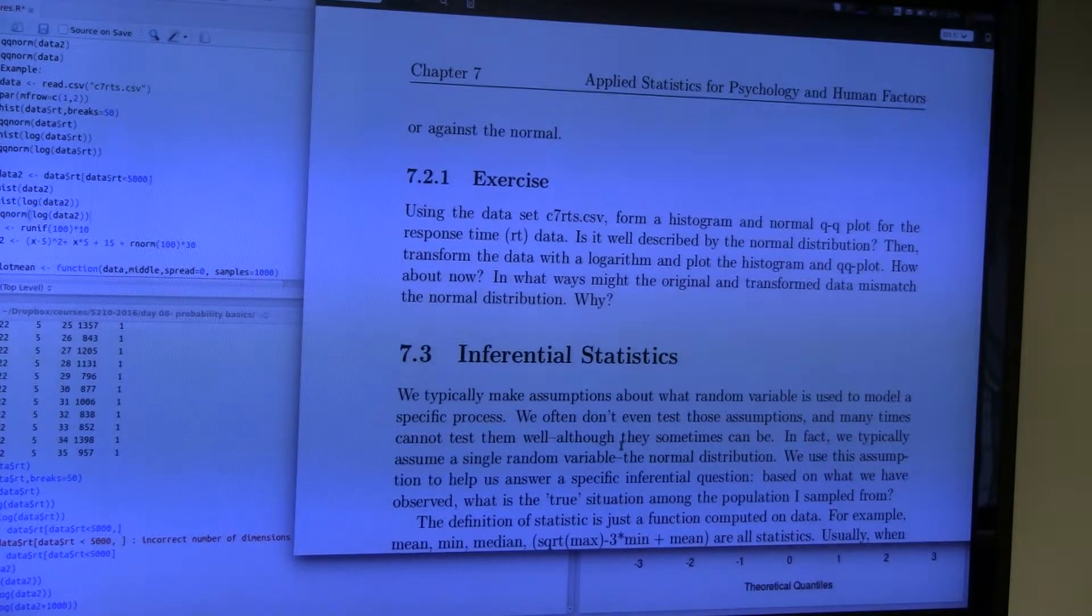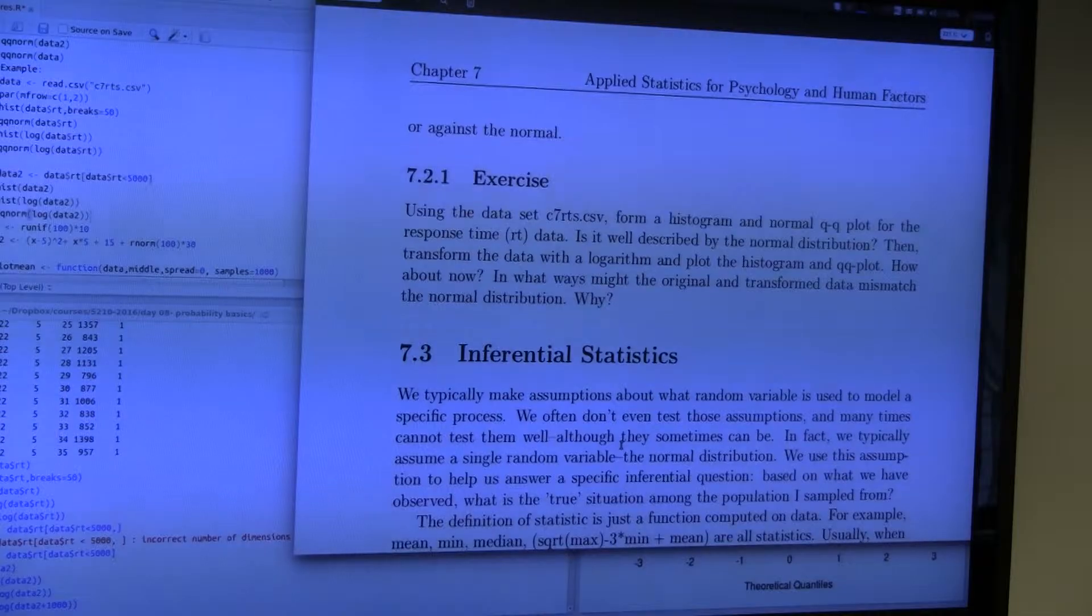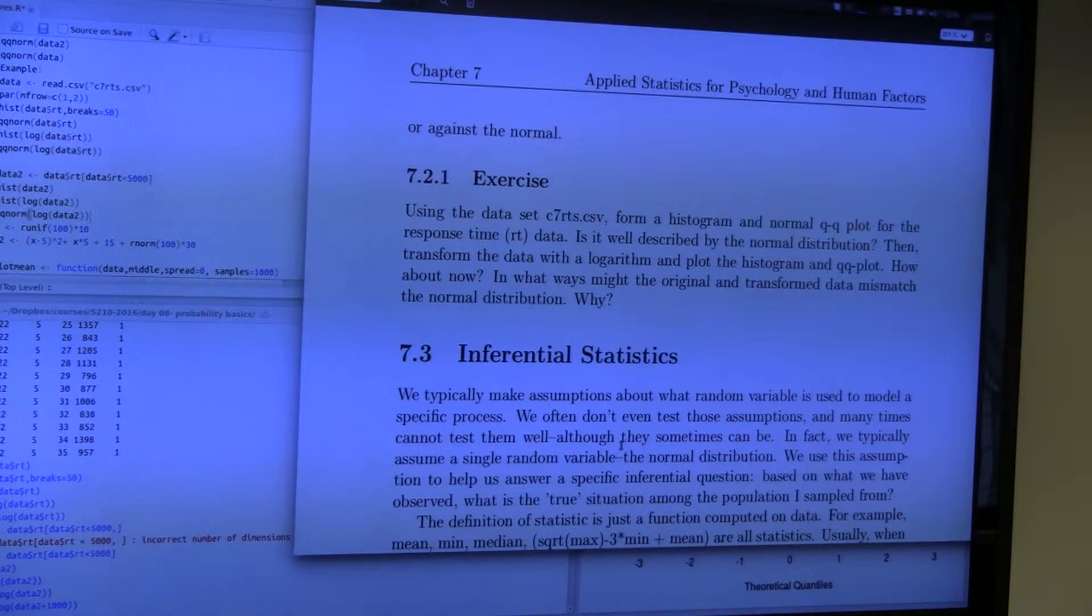And right now we're trying to estimate that. So we're trying to make inference based on asking 500 people what 30 million people would do. If they had enough resources, someone could in theory sample 30 million people every day, and then we wouldn't have to do inferential statistics at all.